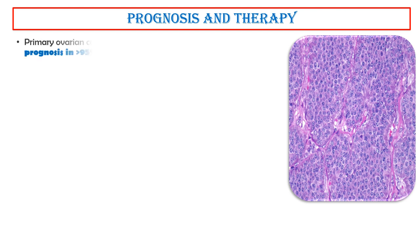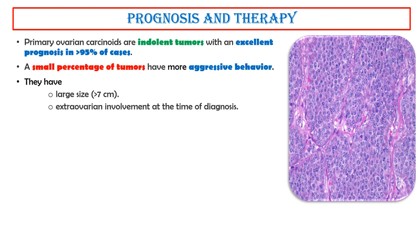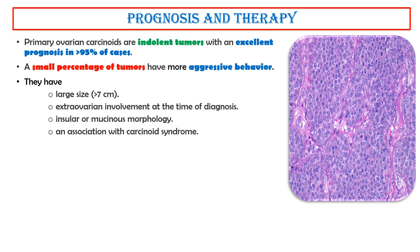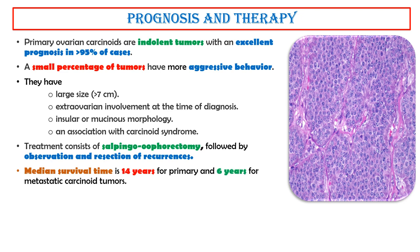Primary ovarian carcinoids are indolent tumors with an excellent prognosis in more than 95% of cases. A small percentage of tumors have more aggressive behavior — these have large size (more than 7 cm), extra-ovarian involvement at the time of diagnosis, insular or mucinous morphology, and association with carcinoid syndrome. Treatment consists of salpingo-oophorectomy, followed by observation and resection of recurrences. Median survival time is 14 years for primary and 6 years for metastatic carcinoid tumors.